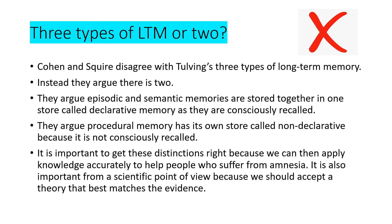Another limitation is: are there three types of long-term memory or two? Cohen and Squire disagree with Tulving's idea that there are three types. Instead, they argue there are two — that episodic and semantic memories are stored together in one store called declarative memory, because they are consciously recalled. They argue that procedural memory has its own store called non-declarative, because procedural memories are not consciously recalled. It's important we get these distinctions right because we want to apply this knowledge accurately to help people who suffer from amnesia, and from a scientific viewpoint we should accept the theory that best matches the evidence.